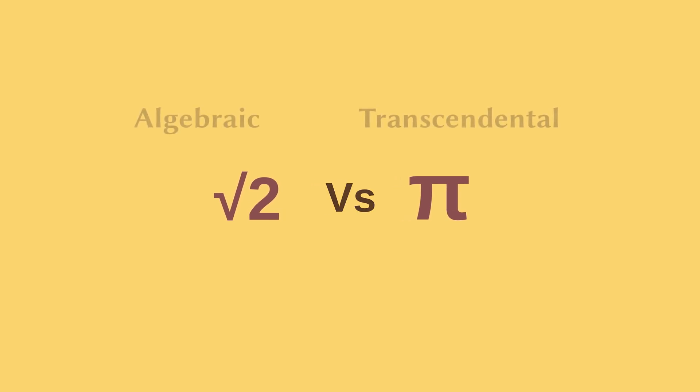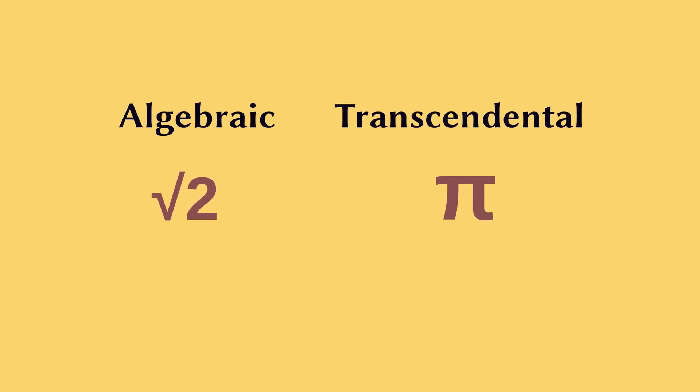π is not only irrational but also a transcendental number. A transcendental number is a complex number that is not a root or solution of a non-zero polynomial equation. Numbers that are not transcendental are called algebraic, and they can be expressed as a solution of polynomial equations.